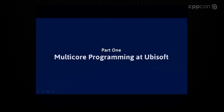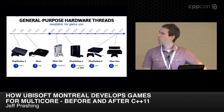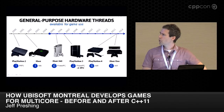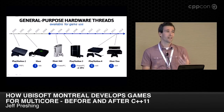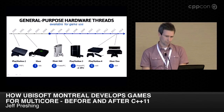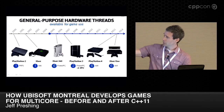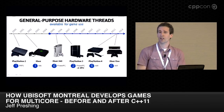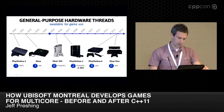Part one: the obligatory slide showing typical consoles we develop for and the number of hardware threads in each. Before 2005, it was pretty much just one general purpose hardware thread all the time. Now it's more usual to see up to six CPU cores or hardware threads. We don't really make a big distinction between the two when we develop for games — hardware threads are cores, so I'll use the words interchangeably. One exception: PlayStation 3 had only two hardware threads complemented by six SPUs, which I won't be talking about.